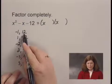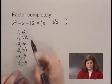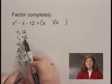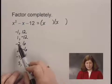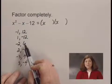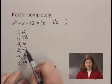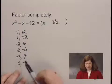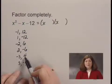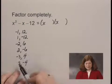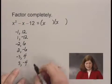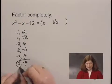The sum of negative 1 plus 12 is 11. The sum of 1 and negative 12 is negative 11. The sum of negative 2 and 6 is 4. The sum of 2 and negative 6 is negative 4. The sum of negative 3 and 4 is 1. And the sum of 3 and negative 4 is negative 1, which is the number we're looking for.